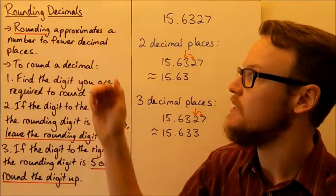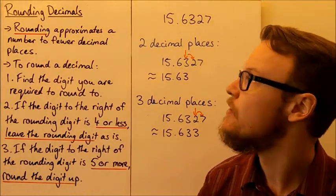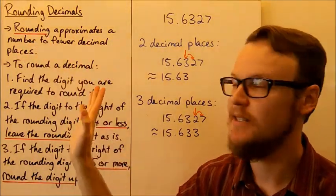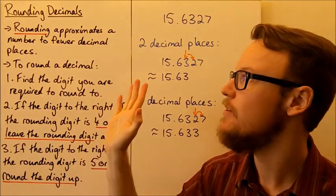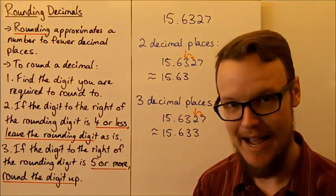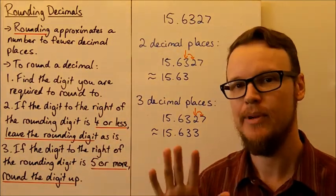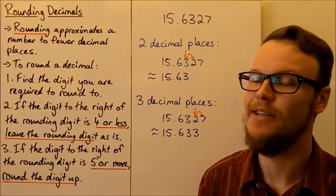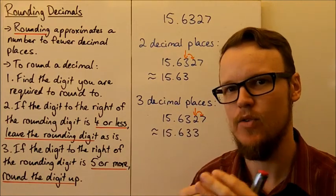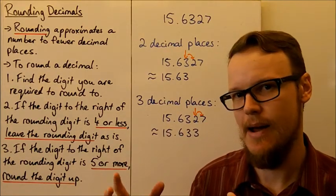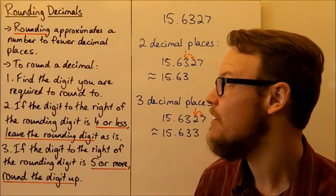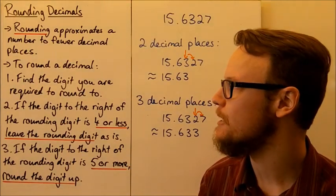Today we're going to look at rounding decimals. Rounding approximates a number to fewer decimal places, so it's not as accurate, but it does mean that it's a bit easier to work with and we can use it to work out whether we've got a similar or correct answer a bit more easily.